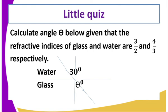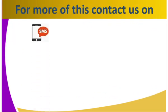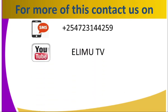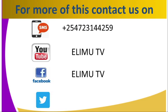Let's see whether we've understood the concept of this lesson. Calculate the angle theta, given that the refractive index of glass and water are 3/2 and 4/3 respectively. From the diagram, the angle of incidence is 30°. You can refer to the physics students' book 3, or contact us through the numbers on your screen, or visit our YouTube channel or Facebook page at Elimu TV, or tweet us at elimutv_ke. Once again, I'm your tutor — stay tuned for more lessons to come.